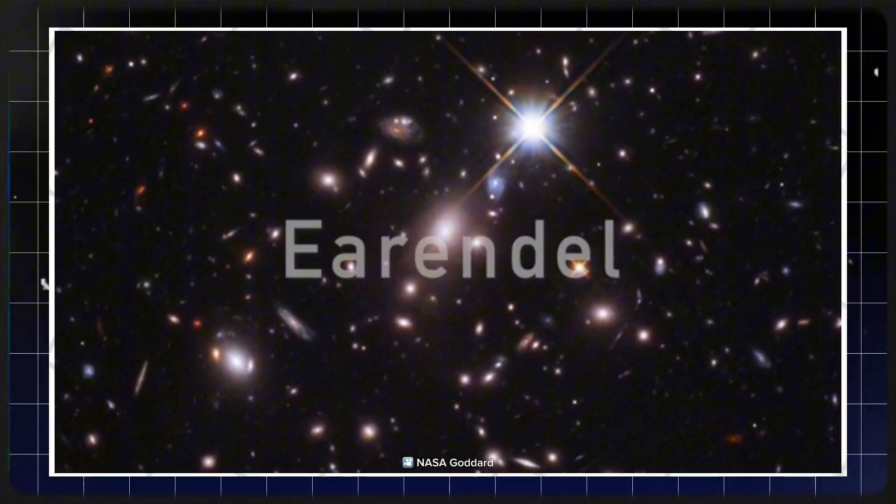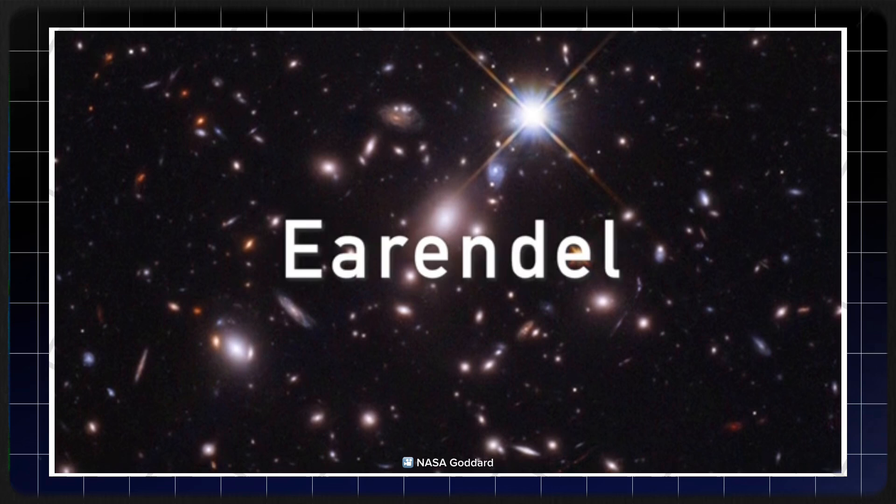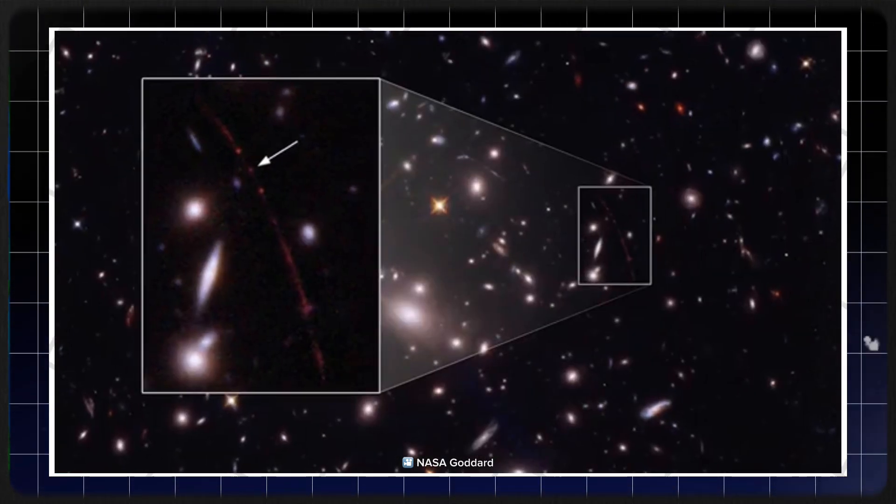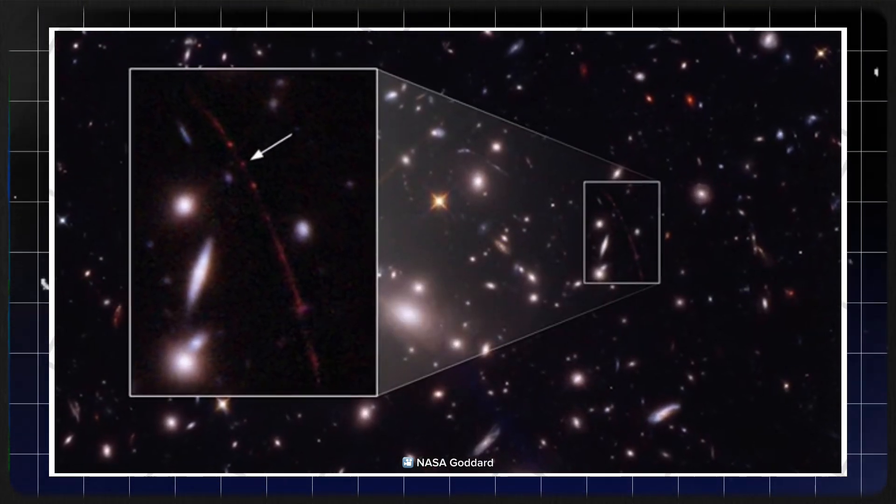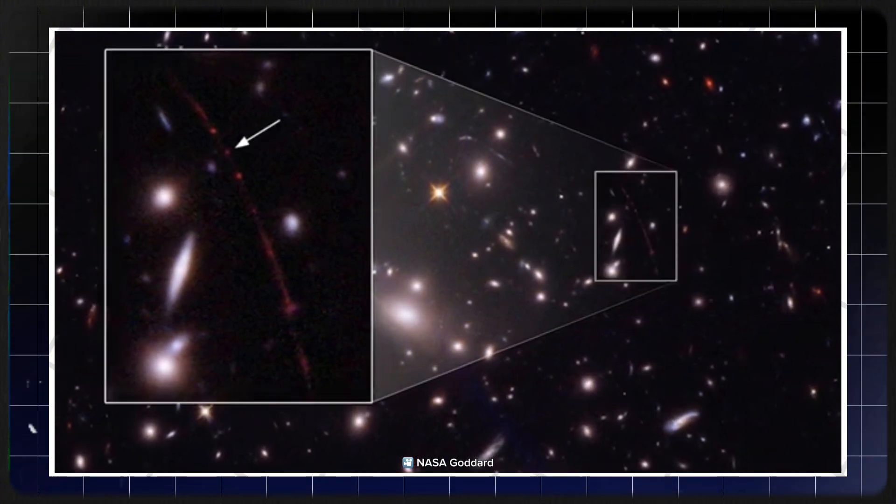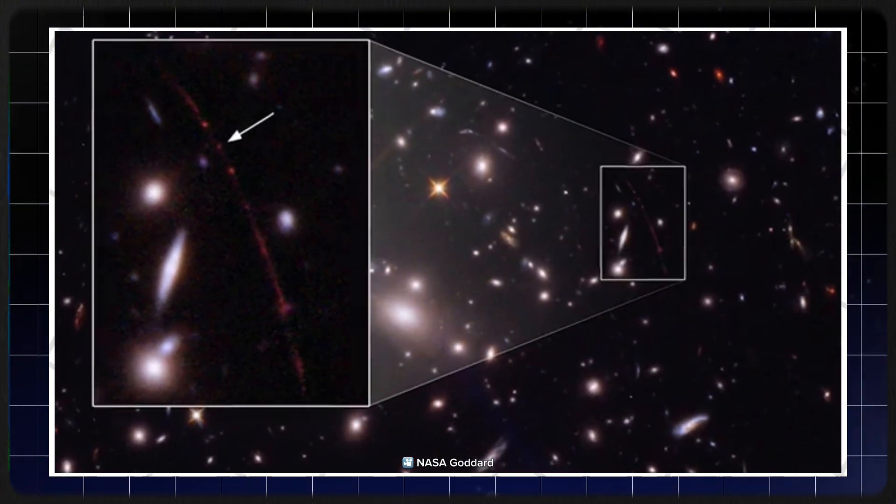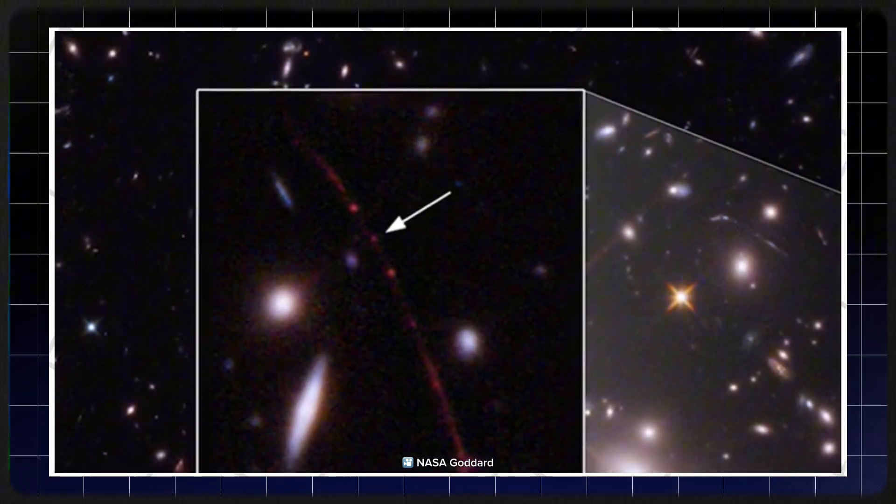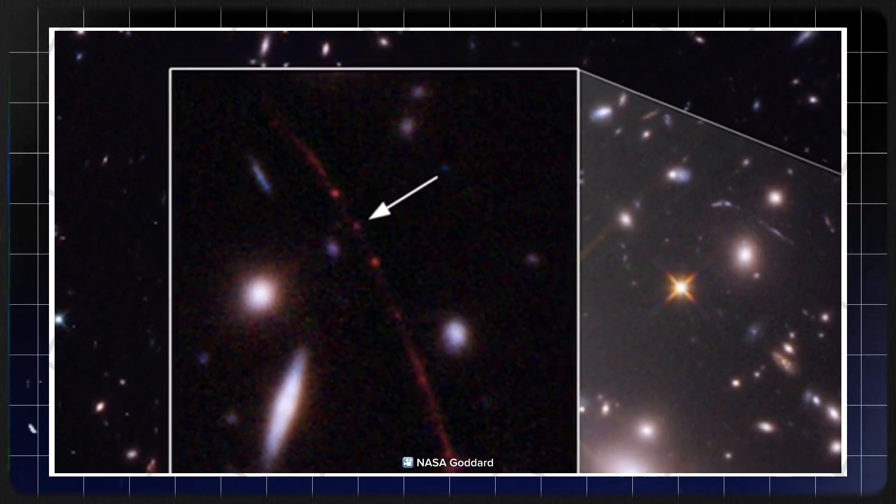A star that outshines our sun by an astonishing 600,000 to nearly 4 million times once existed approximately 13 billion light-years away from Earth. This cosmic marvel known as Eärendel is the most distant star ever observed, providing us with a window into the infancy of the universe itself. Recently, the James Webb Space Telescope turned its extraordinary observational power toward Eärendel, achieving a feat that has left scientists and space enthusiasts alike in awe.